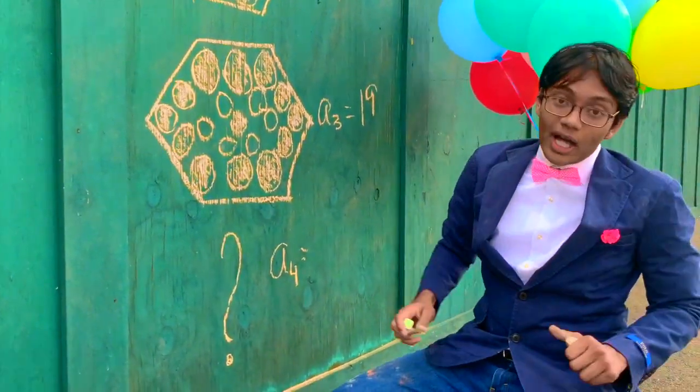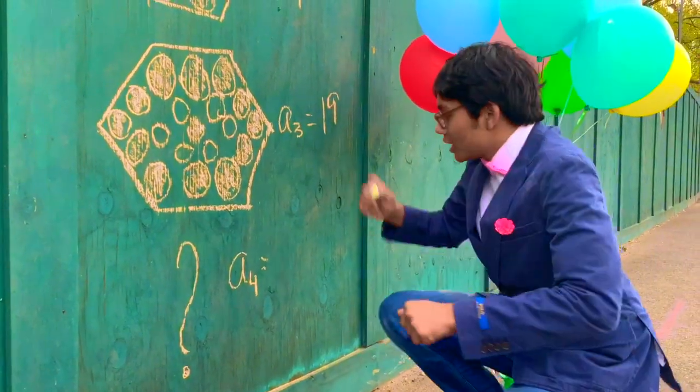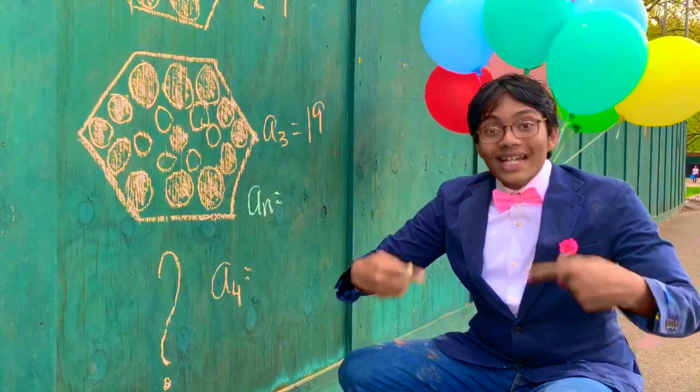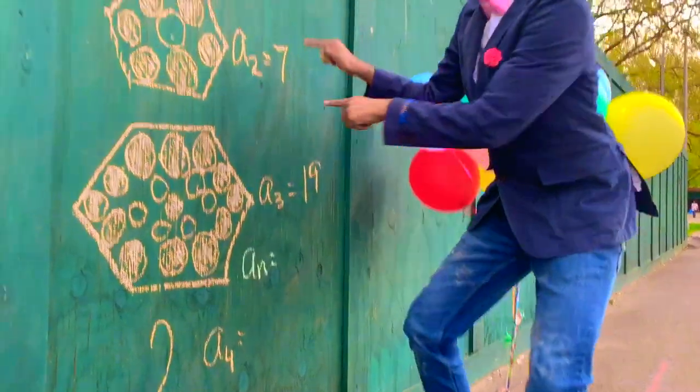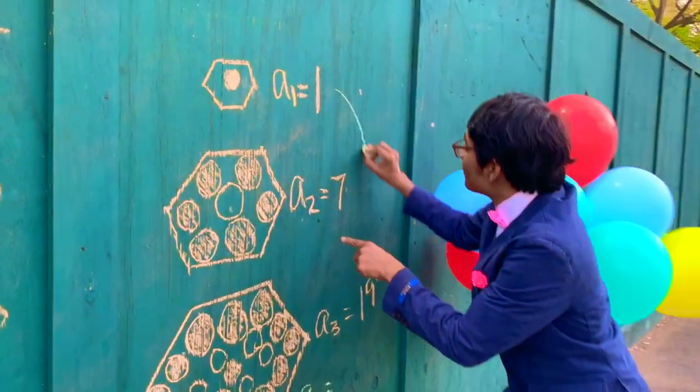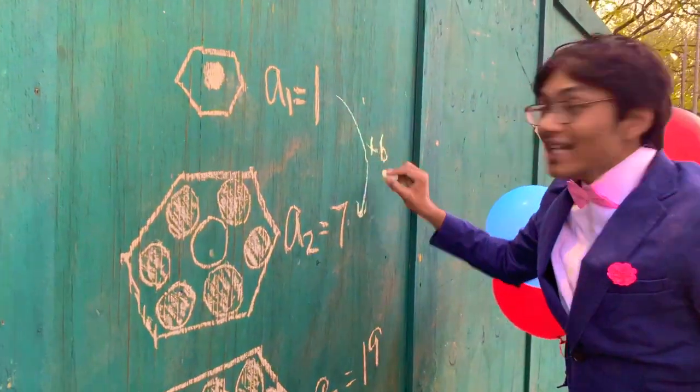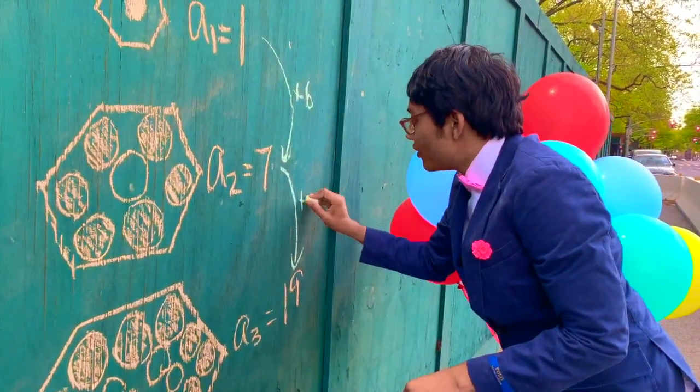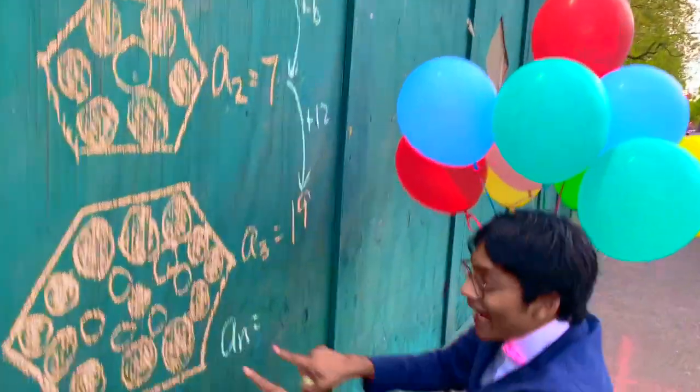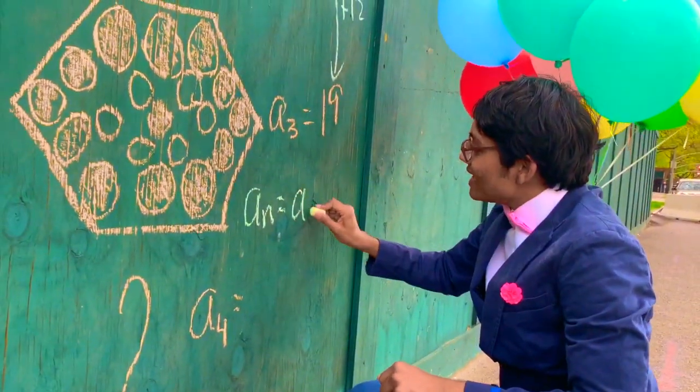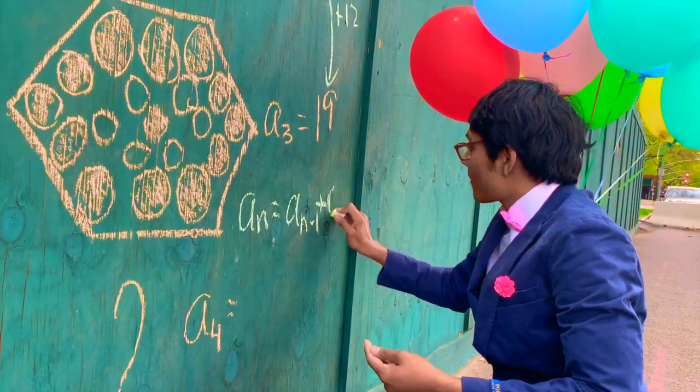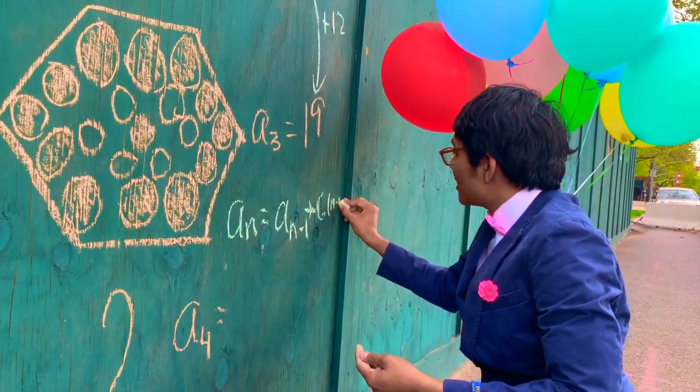Well, to find out the next term in the sequence, what we want to do is find a formula, a general recursive formula for what a sub n is equal to. Remember, you can see that each of these formulas builds on the next. For example, a sub 2 is 6 plus a sub 1. A sub 3 is 12 plus a sub 2. And so on and so forth. And so likewise, a sub n is a sub n minus 1 plus 6 times n minus 1.